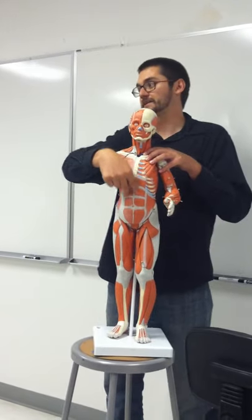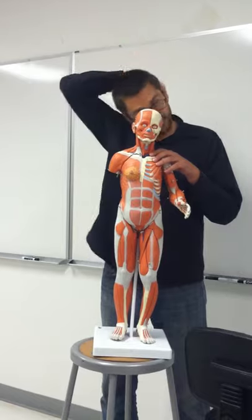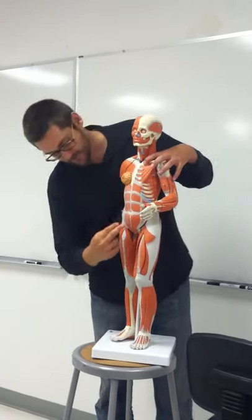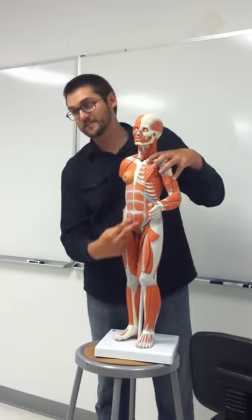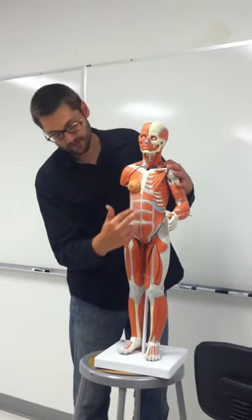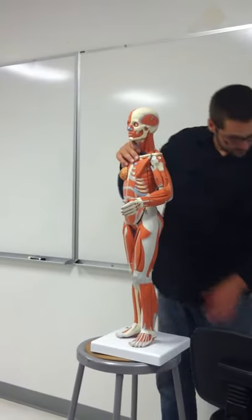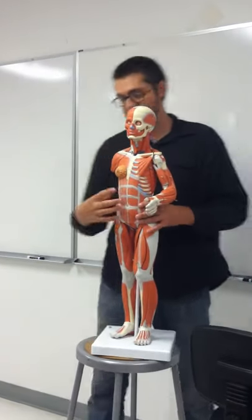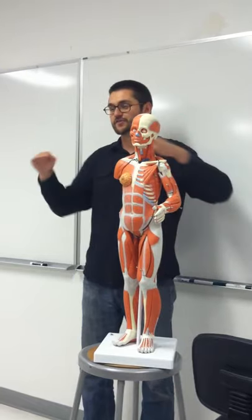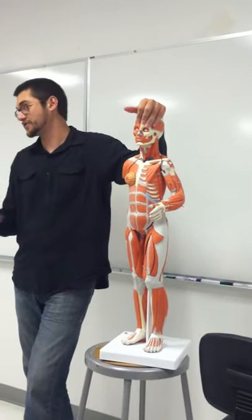These muscles here are rectus abdominus — your six-pack muscles. There are actually four groups, so theoretically you could get an eight-pack. Rectus abdominus muscles are flexors of the trunk. Transversus abdominus is deeper; consider it as part of the obliques group. Don't worry about identifying transversus abdominus specifically.